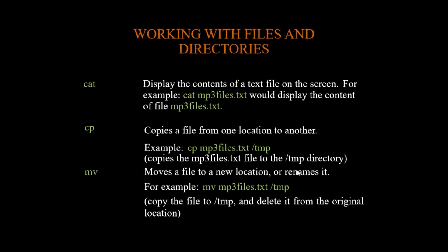When working with files and directories, the cat command helps you preview the content of a file on the command line. It displays the content of a text file on the screen. For example, cat mp3files.txt would display the content of mp3files.txt. cat serves as a preview for all files.